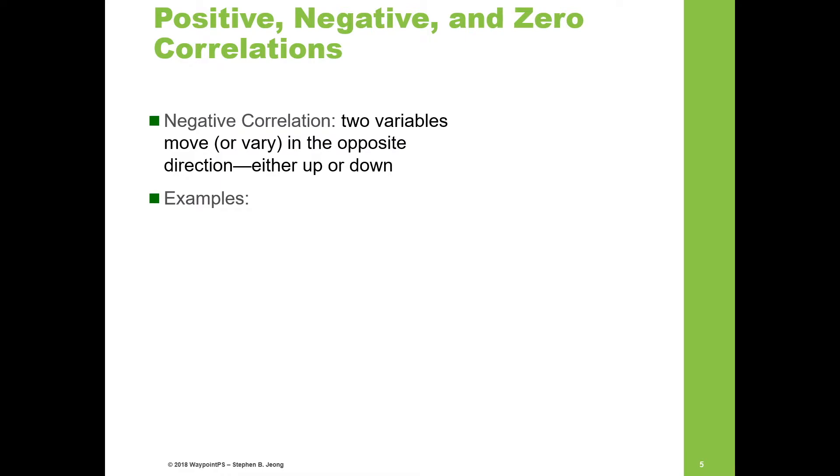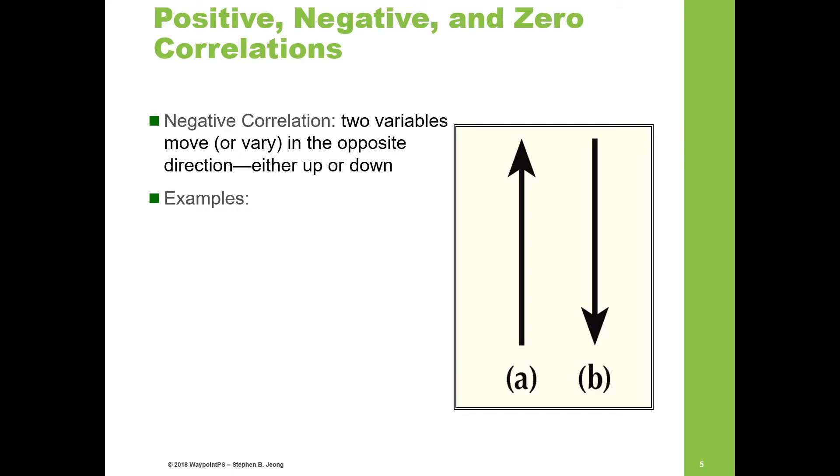Negative correlation is when two variables move in the opposite direction. Here's a visual example: as variable A goes up, variable B goes down. For example, economic conditions and crime rate. As the economy improves or increases, the crime rate will tend to go down.